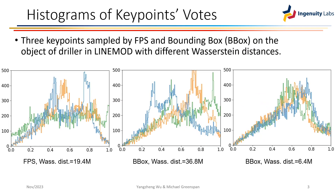Here is a visual example illustrating the histogram distribution of three keypoints sampled using FPS and bounding boxes. The radial voting quantity — representing the gradient distance from object points to keypoints — is employed for simplicity, due to its single dimension making it easier to visualize in a histogram compared to offset and vector, which necessitate at least two dimensions. The Wasserstein distance between these keypoints is also calculated. As illustrated in the third histogram, keypoints sampled using a bounding box with minimum Wasserstein distance exhibit more uniformly distributed votes, indicated by a more similar contour of the histogram, compared to the first and second histograms.